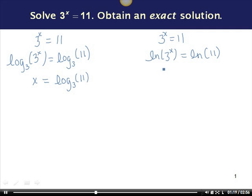I can rewrite ln(3^x) using the power property of logarithms. This is the same as x times ln(3). So I have x·ln(3) = ln(11). Dividing both sides by ln(3), I get x = ln(11)/ln(3).